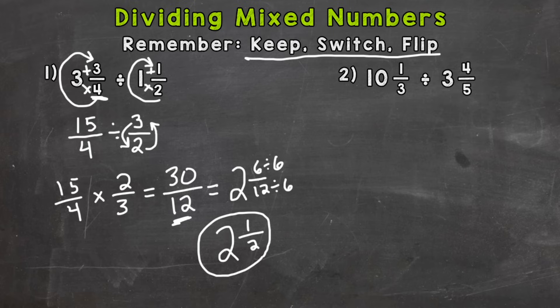So let's try number 2 now. We have 10 and a third divided by 3 and 4 fifths. So again, first thing we need to do, change these to improper fractions so we have a numerator and a denominator. 3 times 10 is 30, plus 1 is 31. We keep our denominator of 3 the same. Again, not changing the value of these mixed numbers or the problem in general, just changing the form the mixed numbers are in. Divided by 5 times 3 is 15, plus 4 is 19. Keep the denominator of 5 the same.